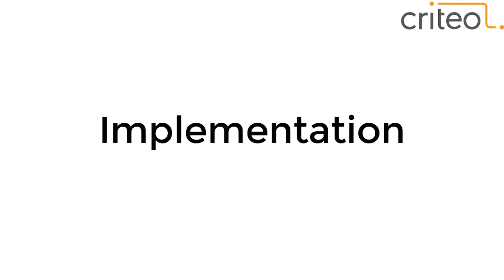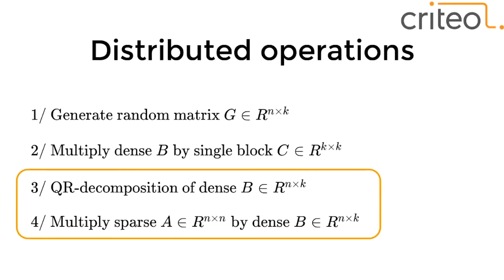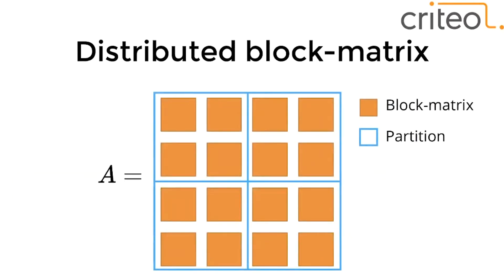The Spark implementation needs four types of distributed operations. First, generate the distributed random matrix G. Second, multiply dense B by a single block C — simple, just broadcast it to every partition. Third, QR decomposition of dense B. Fourth, multiplication of sparse A by dense B. The data structure we work with is a distributed block matrix where A is split into small block matrices united in partitions.